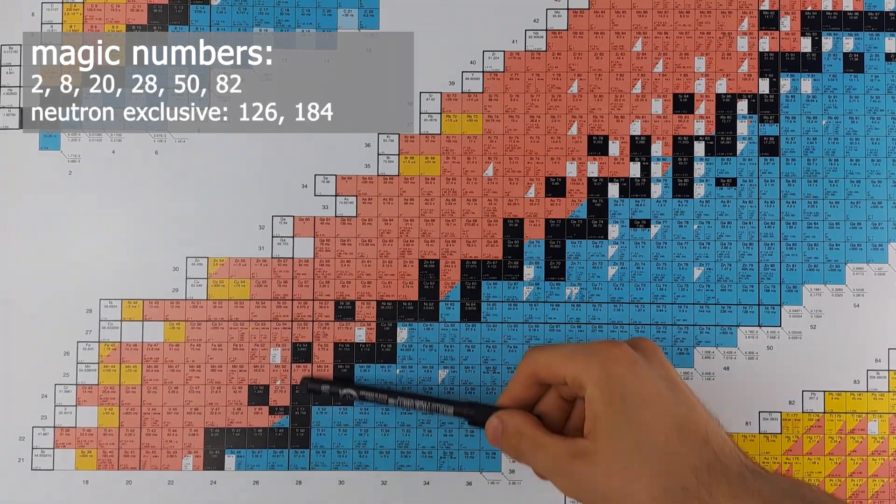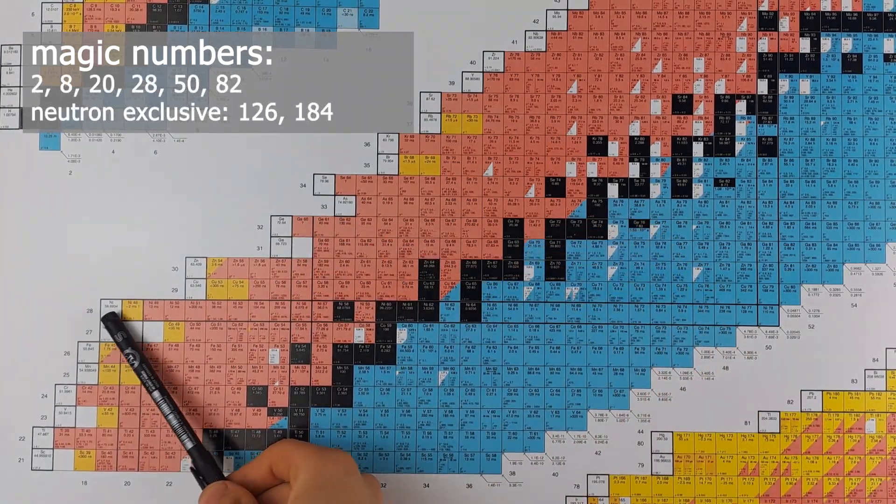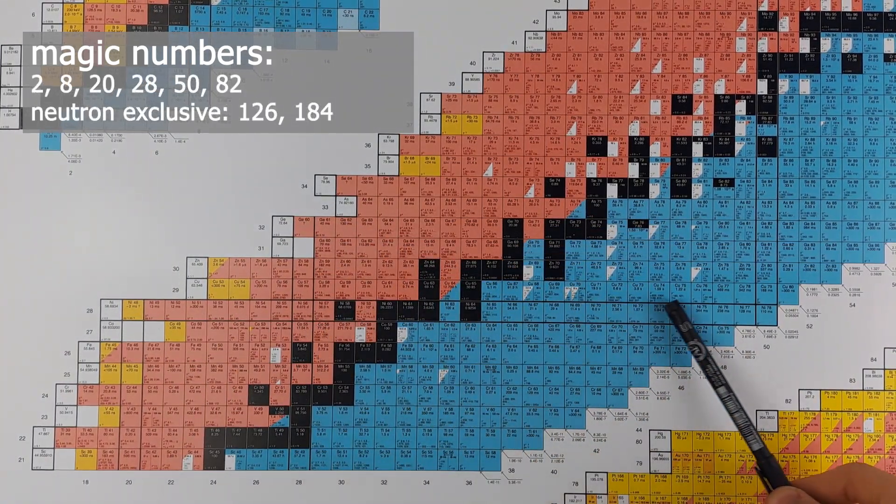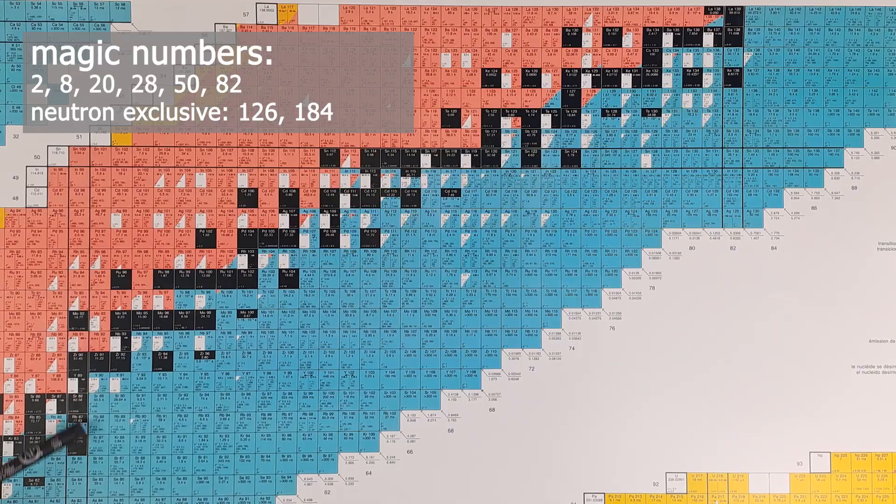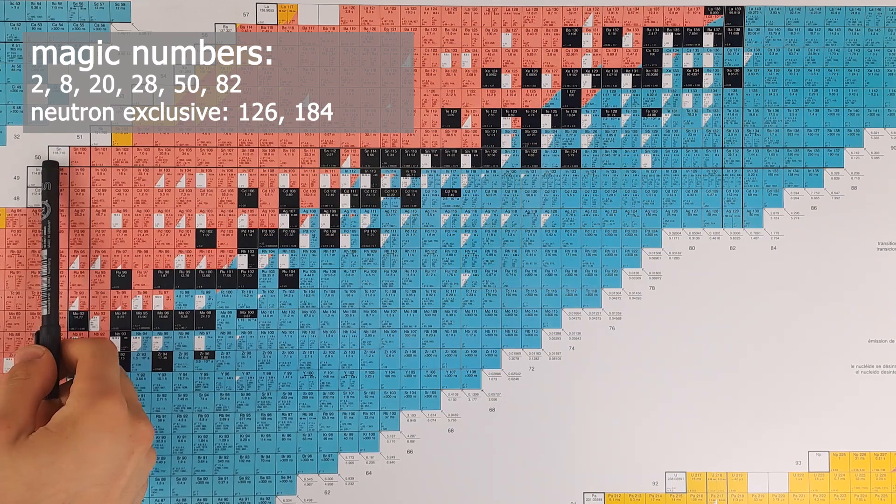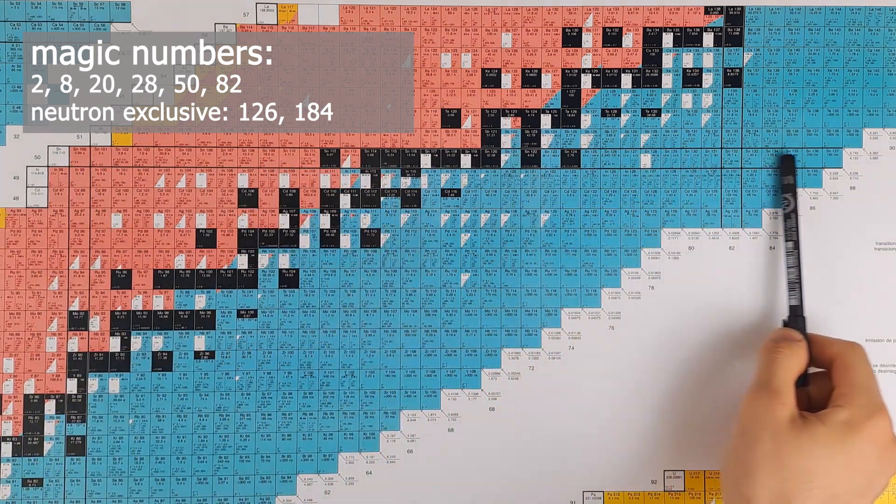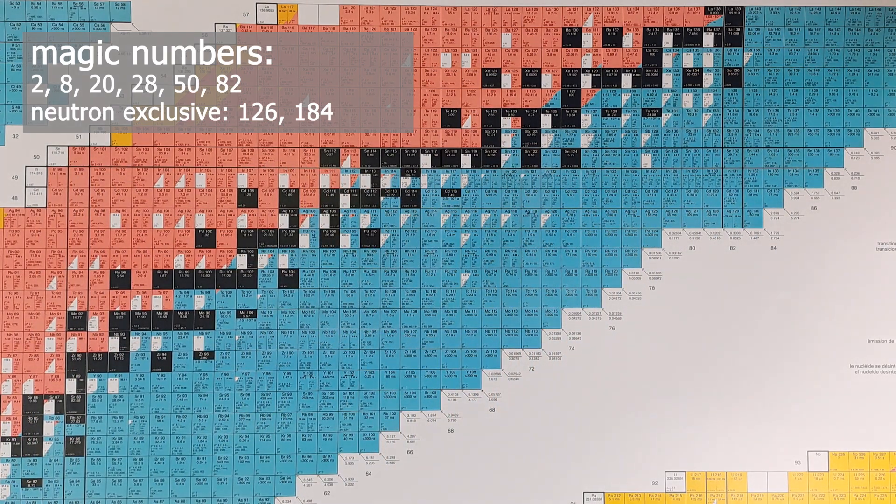Here the numbers are 2, 8, 20, 28, 50, 82, 126 and 184. The last two only apply to the neutron number since we haven't progressed that far in the element synthesis yet.